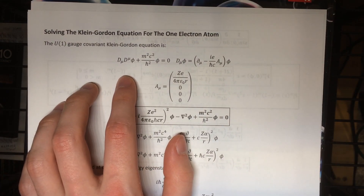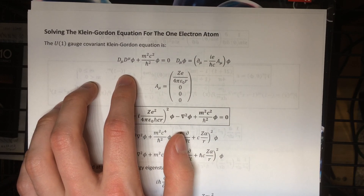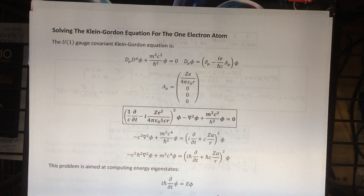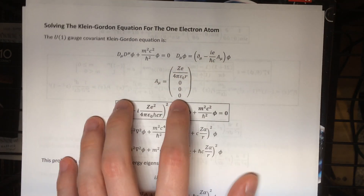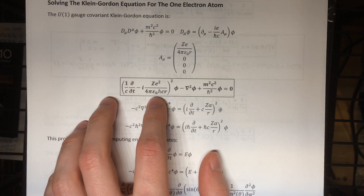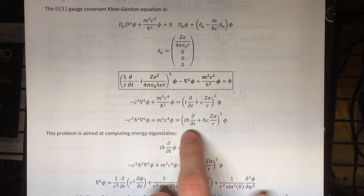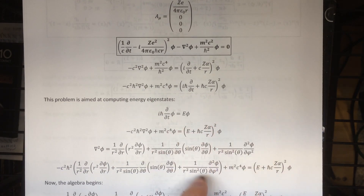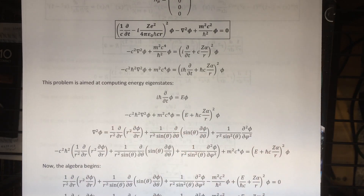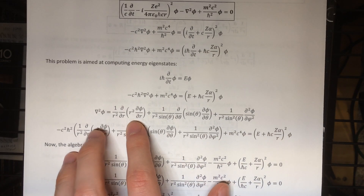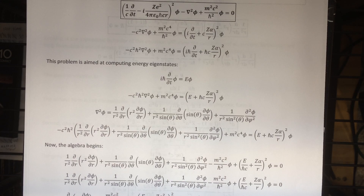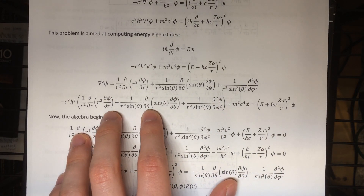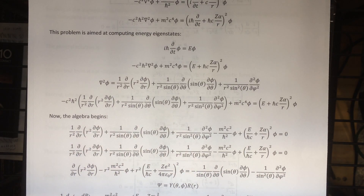The first step in solving the Klein-Gordon equation for the one electron atom is to write out the U1 gauge covariant Klein-Gordon equation. You do that with the standard electromagnetic gauge covariant derivative. This is the hydrogen atom problem, so we pick the Coulomb potential, stick that in, and we've got the Klein-Gordon equation for the hydrogen atom problem. Then I manipulate it to get the energy operator in there, and because we're studying energy eigenstates we can replace it with the eigenvalue since it's applied to the wave function. This gives us the equation we're actually going to solve — a spherically symmetric problem, so we use the Laplacian in spherical coordinates, giving us this separable partial differential equation.